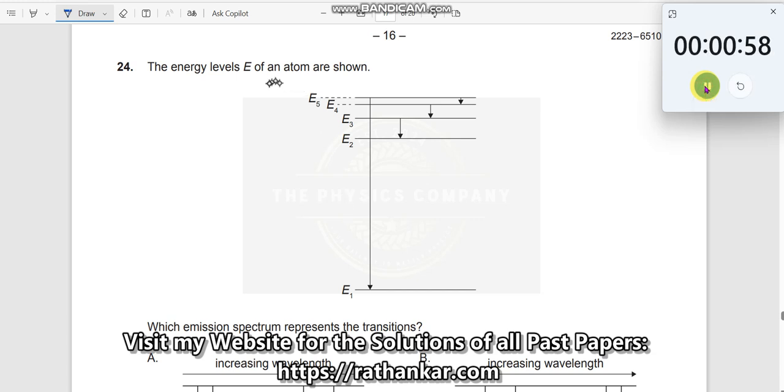Question number 24. The energy levels E of an atom are shown. Which emission spectrum represents the transitions?